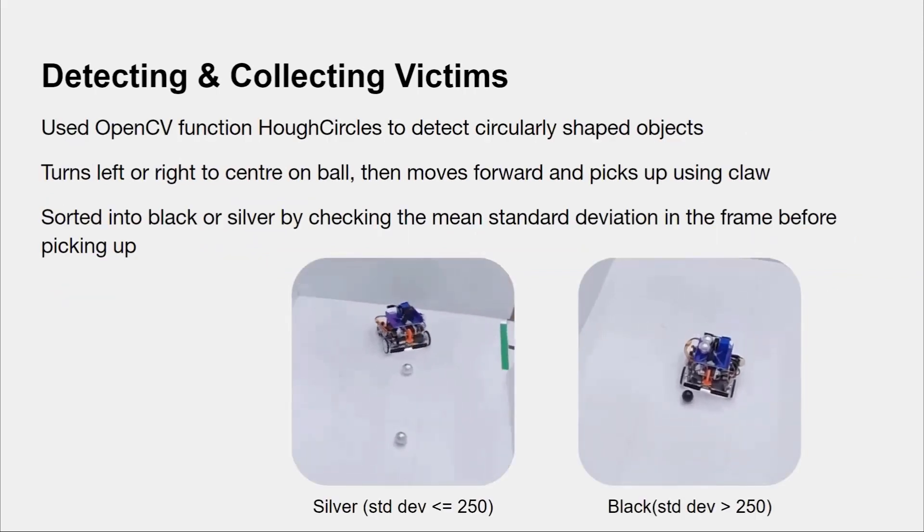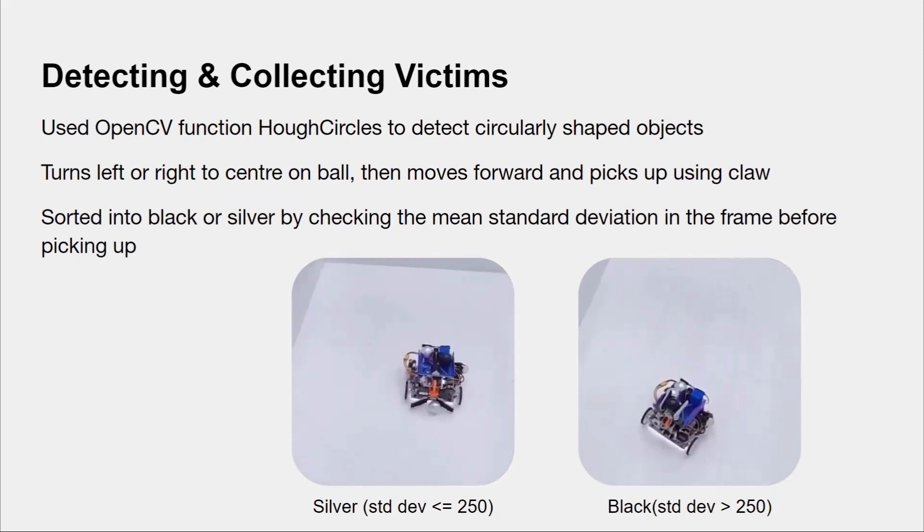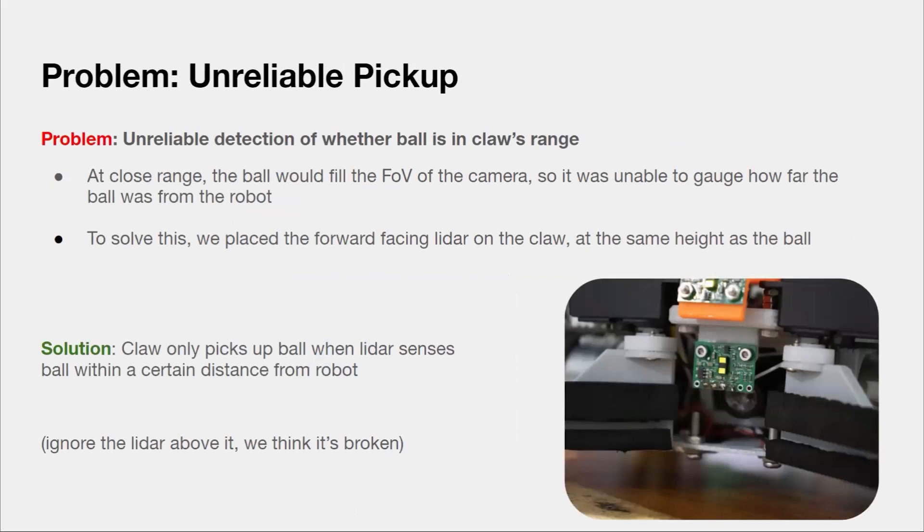For the detection of the victims, we used the Hough circles function to detect circularly shaped objects. It then turns left or right to center on the ball, and then moves forward and picks the victim up. The sorting of the victims is done by the mean and standard deviation in the frame. Another problem we faced was unreliable ball pickup. At close range, the entire ball would fill up the camera's field of view, and the robot was unable to gauge how far the ball was. So sometimes it could hit the ball away instead of picking it up. To solve this, we placed our forward-facing LIDAR on the claw at the same height as the ball, so that the claw only picks up the ball when the LIDAR senses that the ball is within a certain distance of the robot.